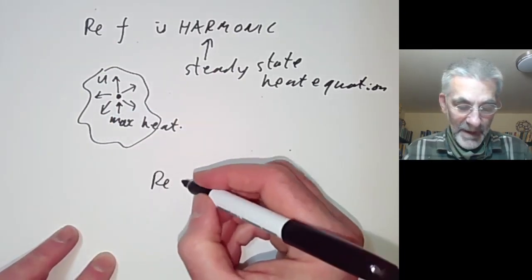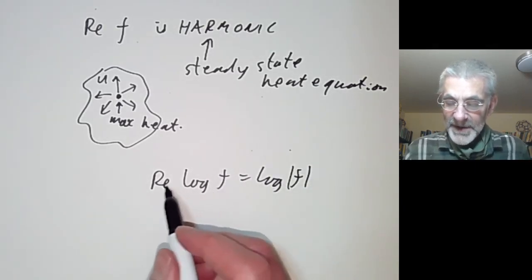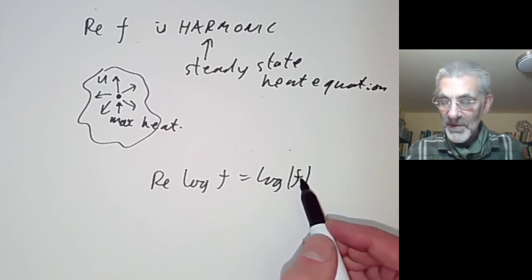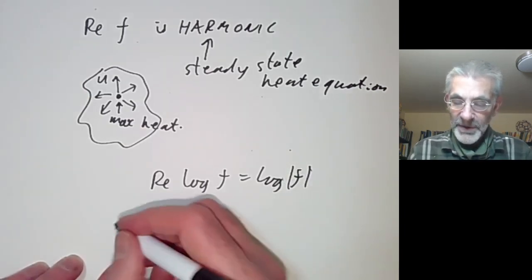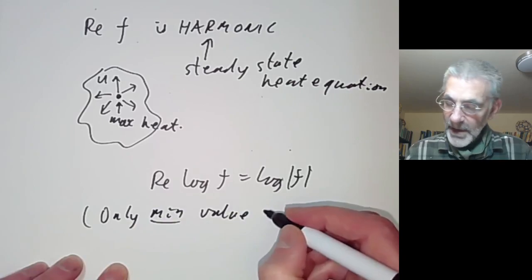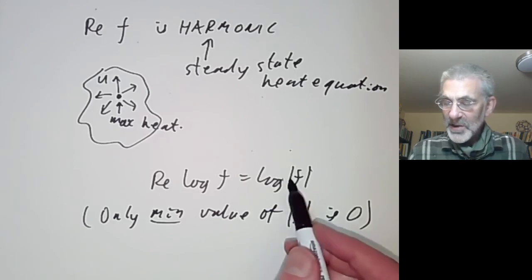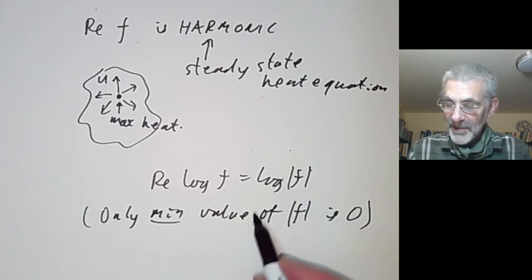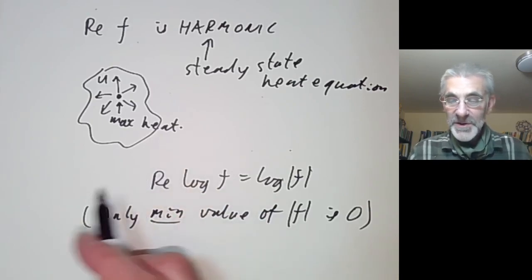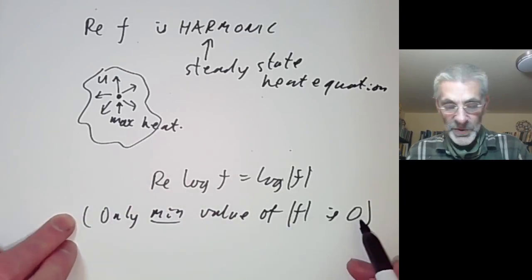The real part of log(f) equals log|f|, and since the real part of a holomorphic function can't attain a maximum value, log|f| can't attain a maximum either, and therefore |f| can't attain a maximum. Note that the only minimum value that f can't attain is zero — if f is zero, its logarithm is no longer holomorphic so the argument doesn't apply. So holomorphic functions can never attain their maximum value unless they're constant, and can only attain their minimum value if they're either constant or have a zero somewhere.